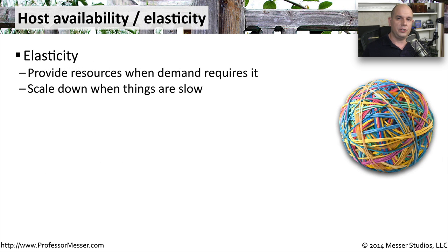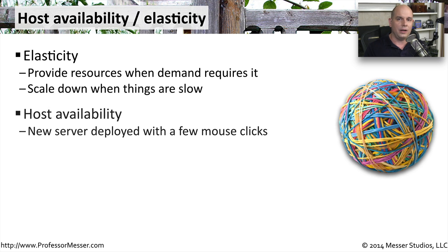In organizations using virtualization in their data center, there are a number of additional functions for performance. One of these is called elasticity, which allows an organization to quickly spin up more systems and roll out more capacity when they need it, and then pull that capacity back and run fewer systems when they don't. If there's a certain time of day, period of the quarter, or during the holiday season where you need more computing resources, it's very easy to deploy more systems to cover that excess load.